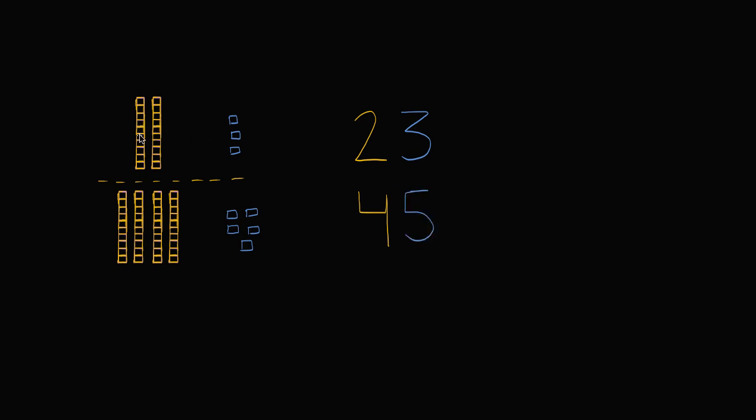So this first number is two tens and three ones, or 23. The second number is four tens and five ones—45.